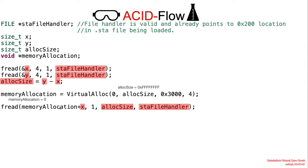If VirtualAlloc does indeed return null, then X basically references an arbitrary memory location. And we can read contents of the file up to the allocation size into an arbitrary location.